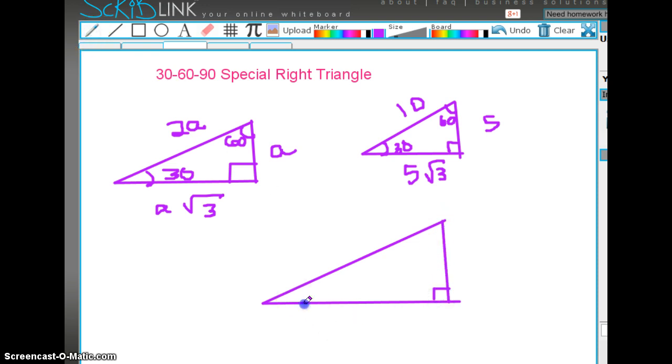Suppose we're given that this is 30 and this is 60 and suppose the side is 15. Then the longest side is 15. The side across from the 30 would be half of that which would be 7.5 and this would be 7.5 square root of 3. Now I've got a couple applications for this.